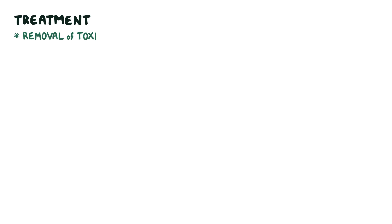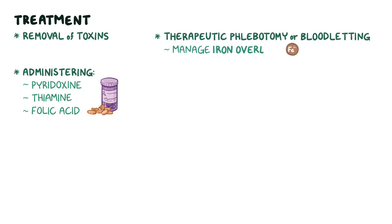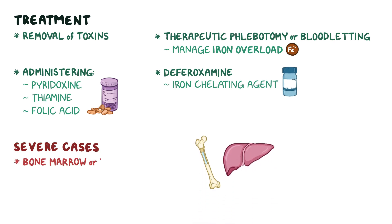Treatment of sideroblastic anemia involves removal of toxins if there are any, and administering pyridoxine, thiamine, and folic acid. Therapeutic phlebotomy or bloodletting can be used to manage iron overload, as well as deferoxamine, an iron chelating agent. In severe cases, a bone marrow or liver transplant might be needed.